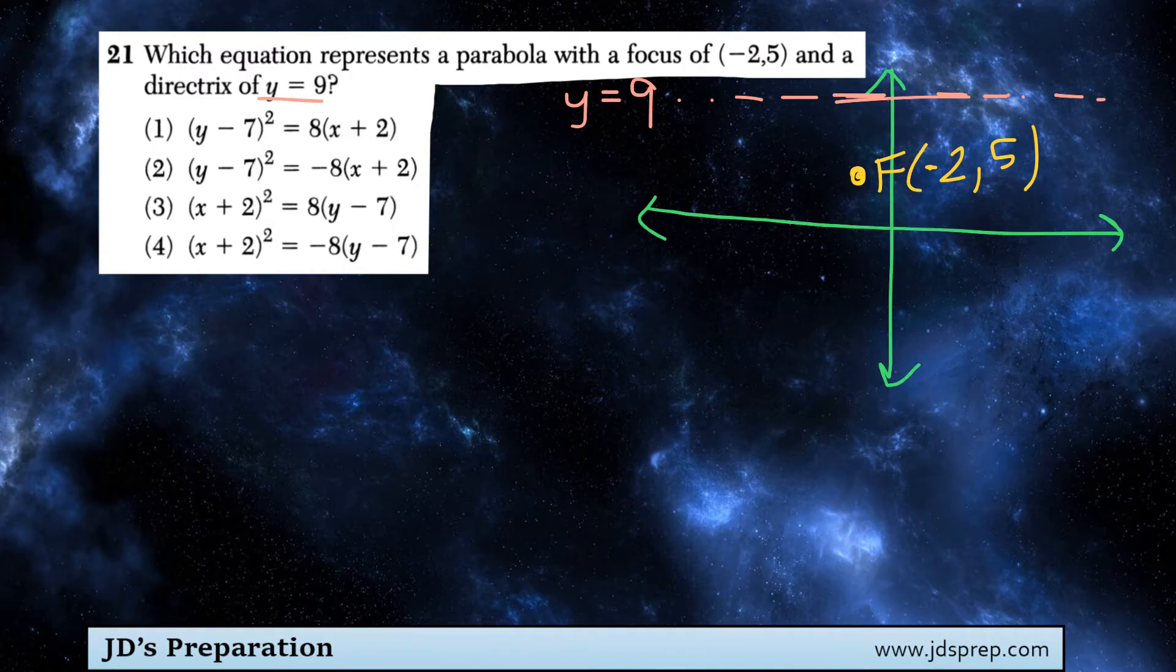That helps us a lot, because now we can actually visually figure out the value of the vertex of the parabola. The vertex is going to be halfway between the focus and the directrix. So we know immediately that the vertex is going to have an x value of negative 2, because it's going to be along that same vertical line. And then to find the y coordinate, it's halfway between the focus and the directrix. So what's halfway between 5 and 9? It's just 7.